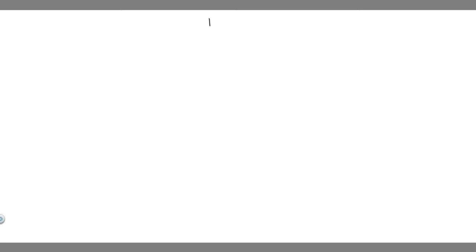In order to solve problems like these, there are two formulas you need to know that deal with conservation of momentum. Let me write them out. We have M1V1 plus M2V2 is equal to M1V1 final plus M2V2 final — that is, the mass of your first ball times its velocity plus the mass of your second ball times its velocity equals the mass of your first ball times its final velocity plus the mass of the second ball times its final velocity.